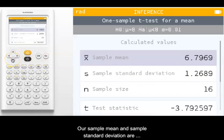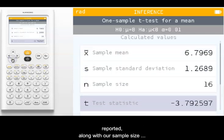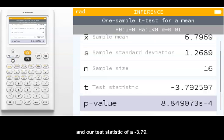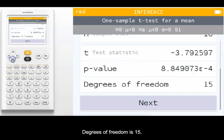Our sample mean and sample standard deviation are reported along with our sample size and our test statistic of negative 3.79. Our p-value is very small, about 0.00088. Degrees of freedom is 15.